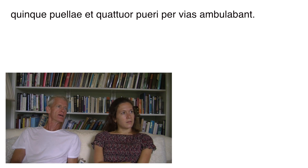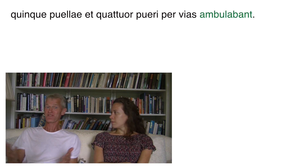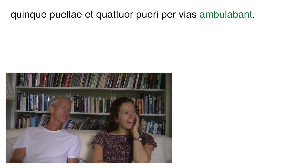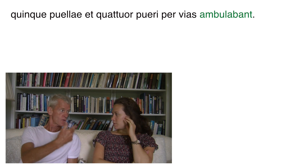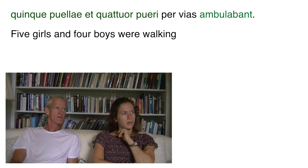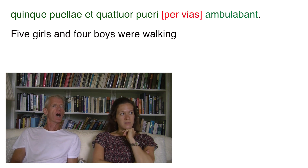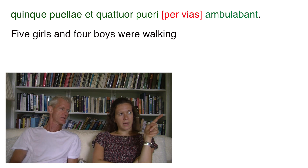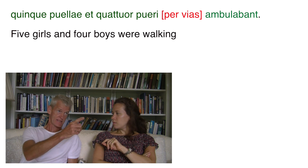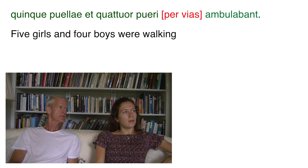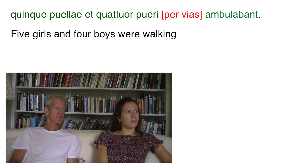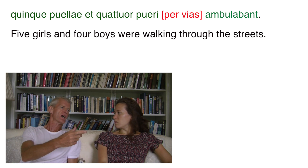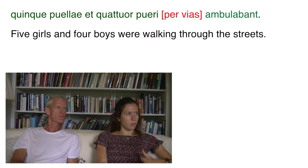Izzy begins translating. She goes straight to the verb — 'ibant,' they were walking — instinctively following the golden rule of looking at the verb first. The subject is five girls and four boys. Then 'per vias' — per plus accusative — through the streets. So: five girls and four boys were walking through the streets.